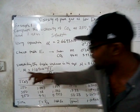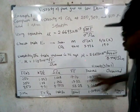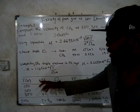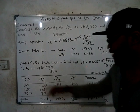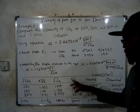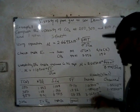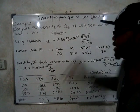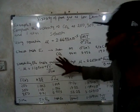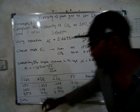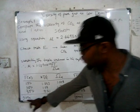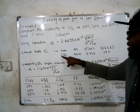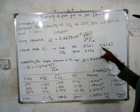You still need to find Ω_μ to get the final viscosity. Set up a calculation table with four columns: (1) temperature T, (2) kT/ε, (3) Ω_μ, and (4) predicted viscosity. The temperatures are those given in the problem. To find kT/ε, recall from Table E1 that for CO2, ε/k = 190.